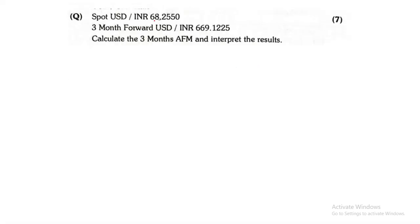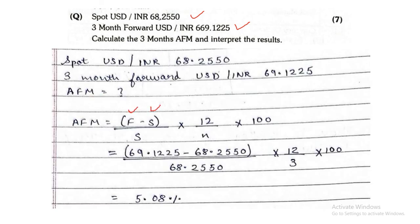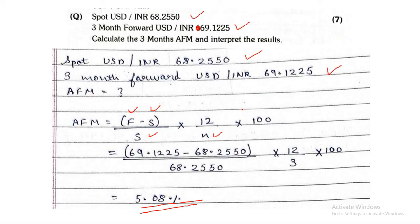Next was 3Q. They are giving the spot rate and the forward rate, and asking you to find the AFM for 3 months. The Annualized Forward Margin formula is: forward minus spot, upon spot, into 12 divided by n number of months, into 100. The spot was 68.2550 and forward was 69.1225. Apply the formula: forward minus spot upon spot, into 12 divided by 3, into 100. You subtract, divide, multiply, and you will get your final AFM. Since the AFM is positive, the base currency is at a premium.